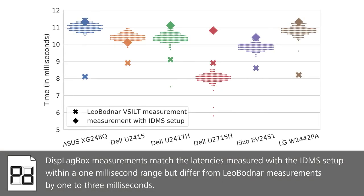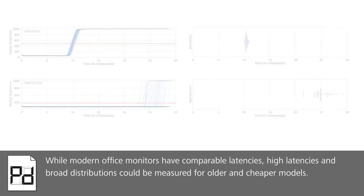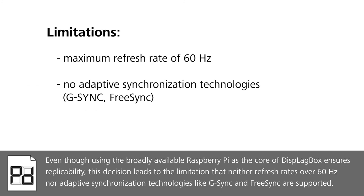This black box's measurements match the latencies measured with the IDMS setup within a 1 ms range, but differ from Leo Bodnar measurements by 1 to 3 ms. While modern office monitors have comparable latencies, high latencies and broad distributions could be measured for older and cheaper models.